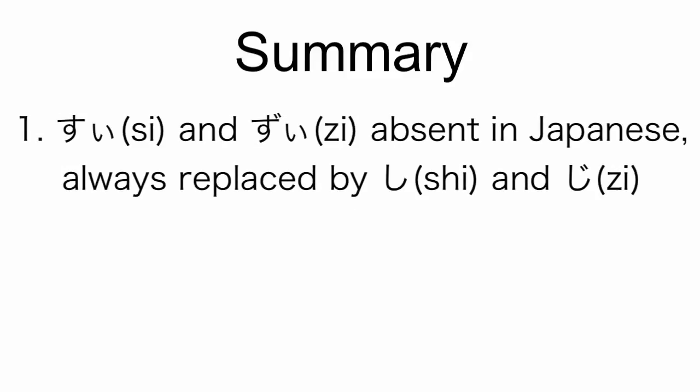In this video, we have learned that すい doesn't exist in Japanese, always replaced with し.